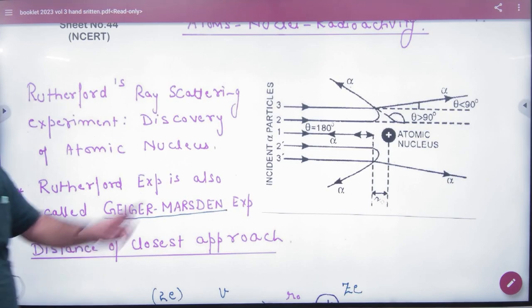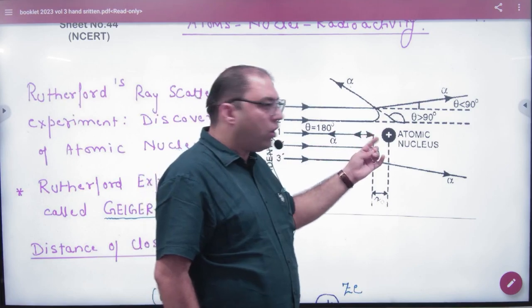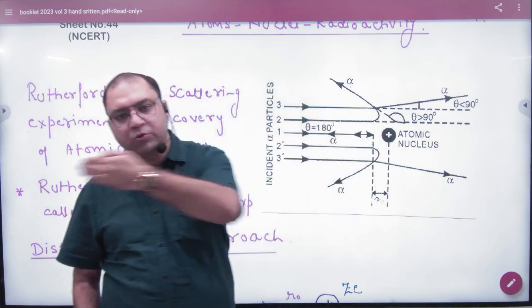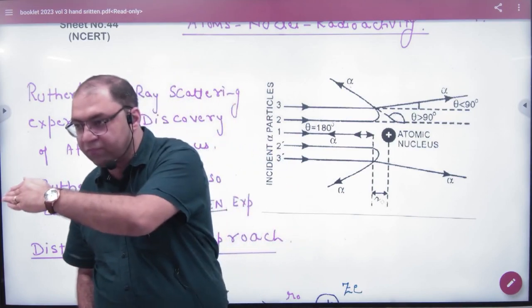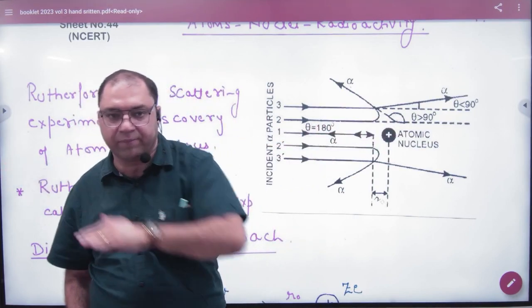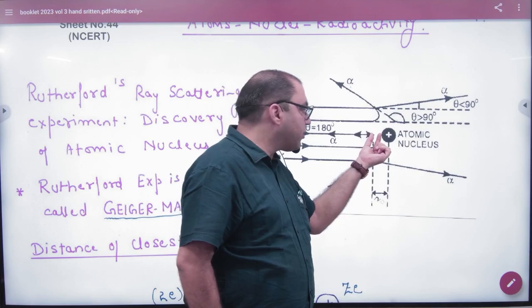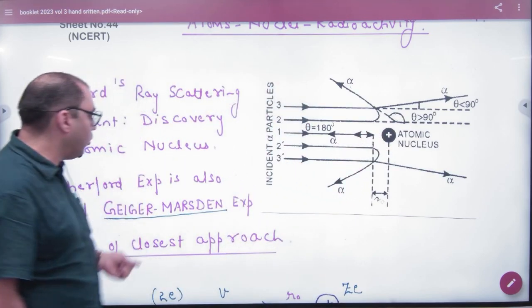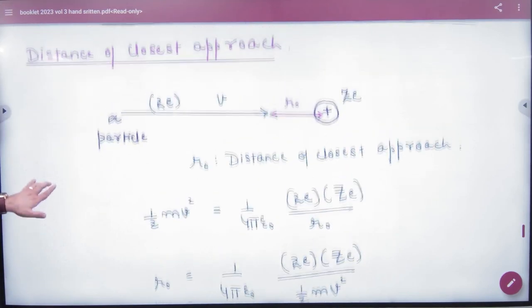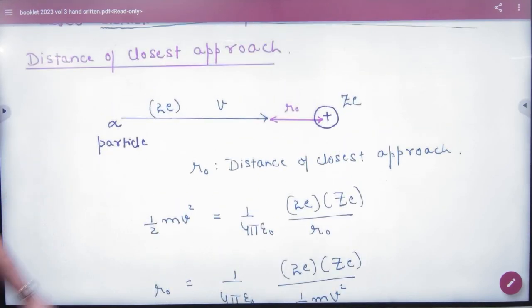Alpha particle goes straight and hits and goes back again, so how much deflection? 180 degrees. So how far it goes is the distance of closest approach.